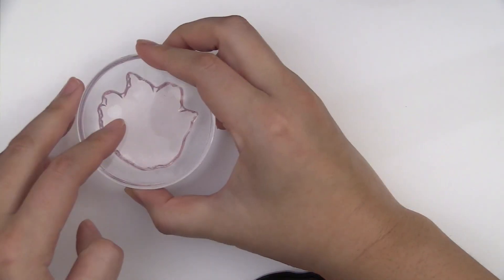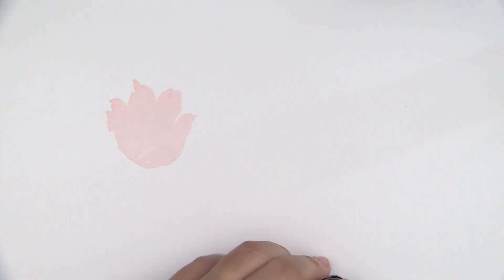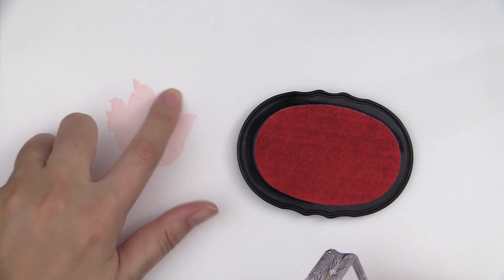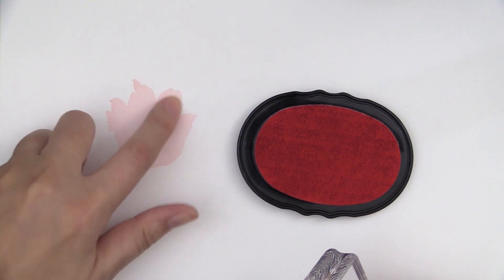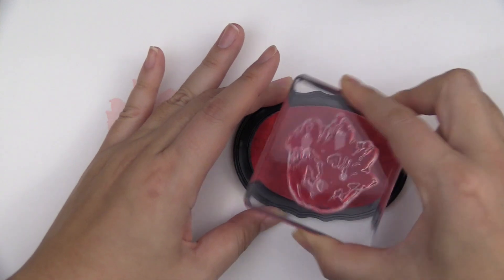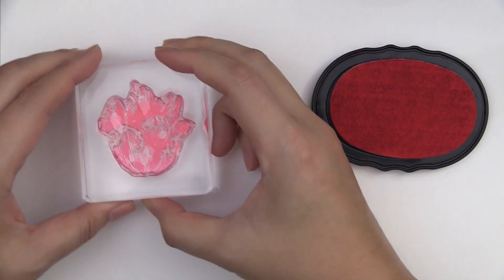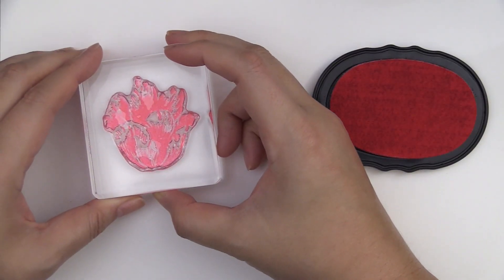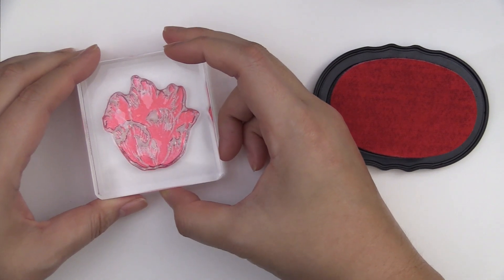So we're going to start with the biggest tulip flower over here. I'm going to stamp this with frosty pink. It's a solid image. I'm going to go around the outline part of the solid image and then stamp the second layer with coral berry using the second layer image on top of the first one.